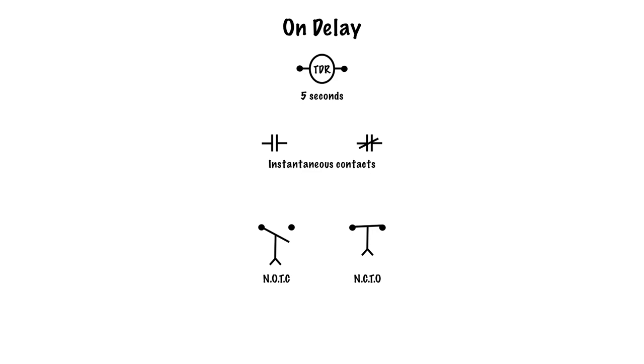Now an on-delay relay is like any other relay. It will have a coil and a set of contacts. The difference is, not only does it have a set of instantaneous contacts—a normally open set and a normally closed set—which close or open instantly when the coil energizes, but it also has a normally open time to close and a normally closed time to open contact.